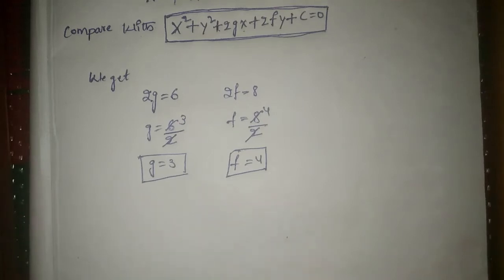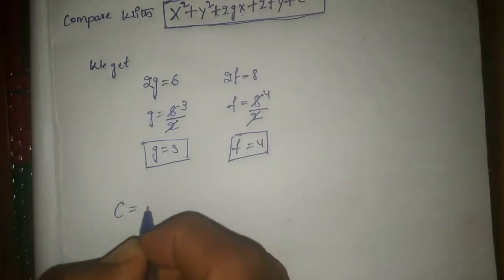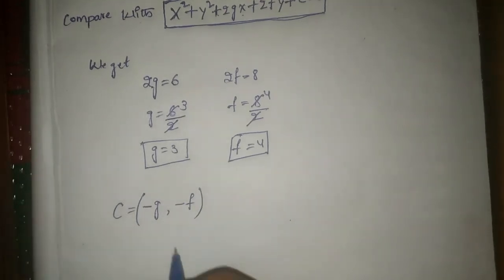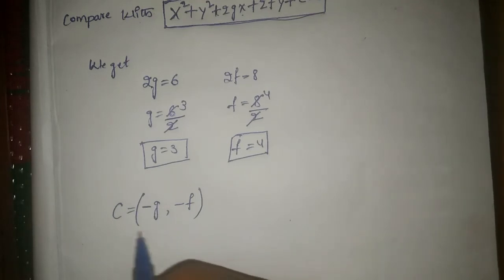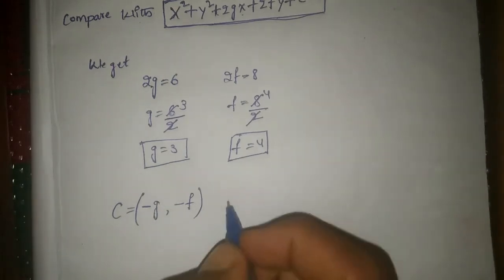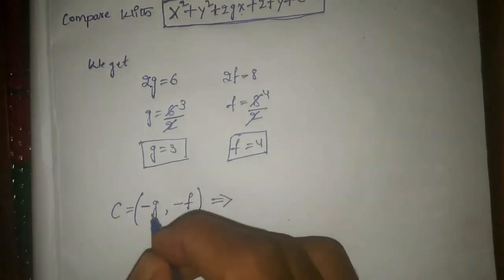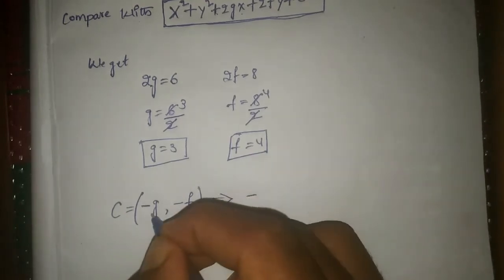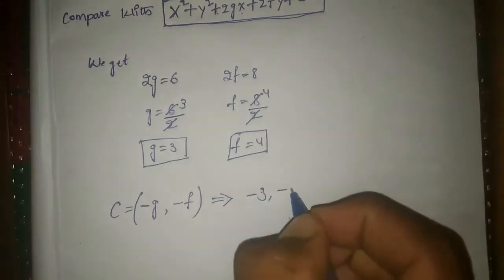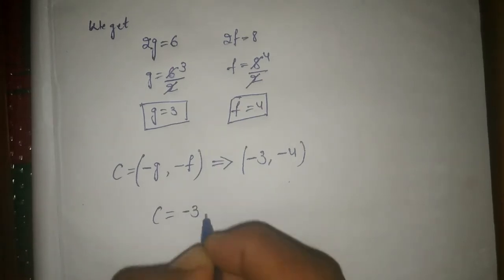To find the center, the formula is: center C = (-g, -f). Substituting the values, g = 3 and f = 4, so the center is (-3, -4).